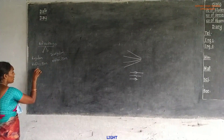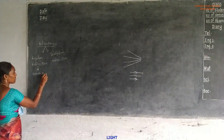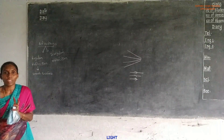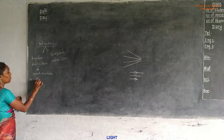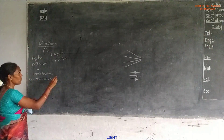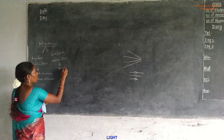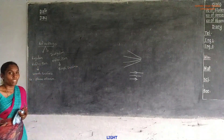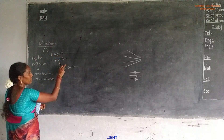Regular reflection always takes place on smooth surfaces, like highly polished surfaces. Example is a plain mirror. Irregular reflection always takes place on rough surfaces. Irregular means up and down — irregularities mean up and down.